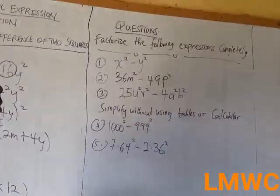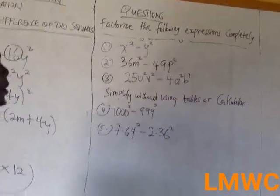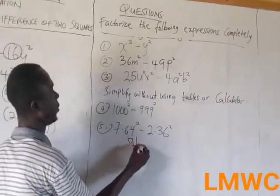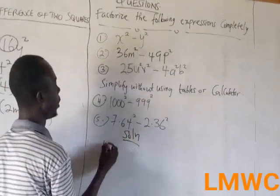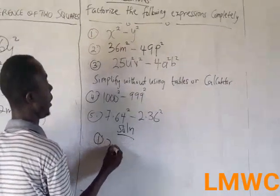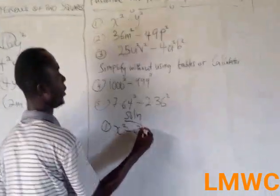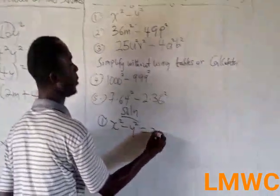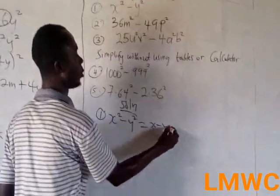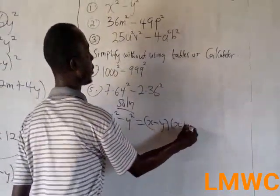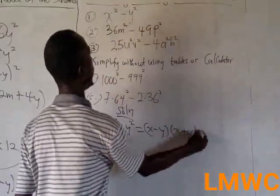Factorize the following expressions completely. Question 1: x squared minus y squared. Applying the difference of two squares, it becomes (x minus y)(x plus y).